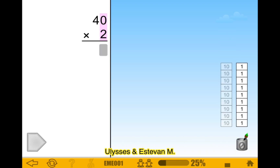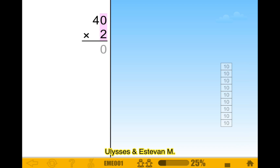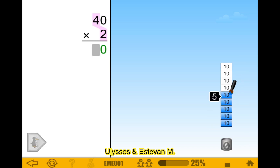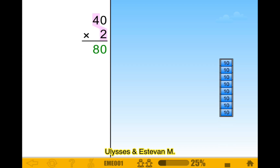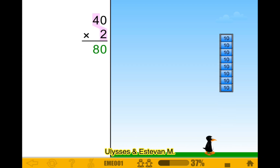30 times three is 90. Okay. 40 times two is 80 — I already know this but let's just do it. Oh it actually shows the number over there. 80. 40 times two equals 80.